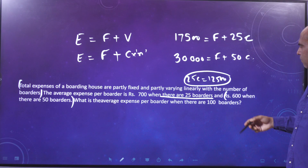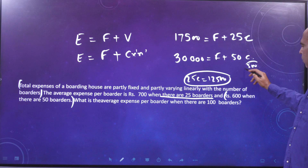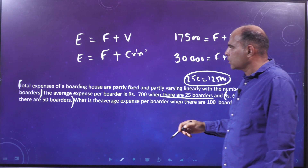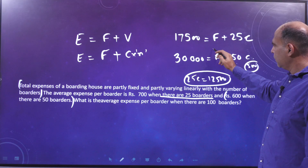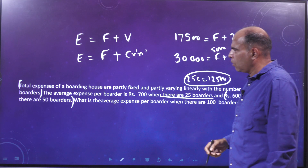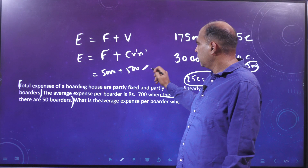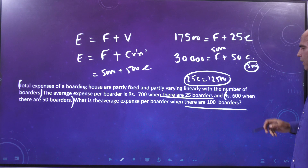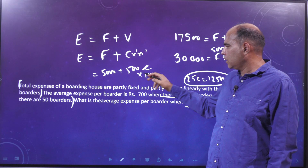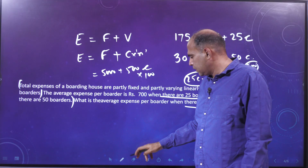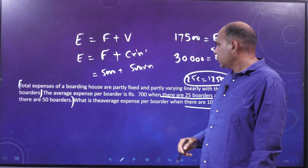From 25c equals 12,500, the value of c must be 500. Substituting back, you can work out that the fixed expense f equals 5,000. So our equation of total expenses becomes: 5,000 plus 500n. The question asks for average expense per boarder when there are 100 boarders, so first find total expense.